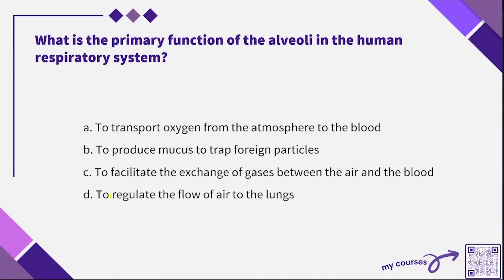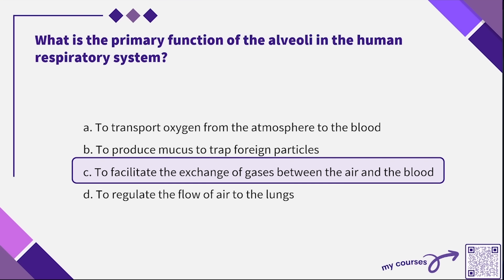Now let's get into questions, starting with some med term. What is the primary function of the alveoli in the human respiratory system? A) to transport oxygen from atmosphere to the blood, B) to produce mucus to trap foreign particles, C) to facilitate the exchange of gases between the air and blood, or D) to regulate the flow of air in the lungs? For these questions, anatomy pictures can be helpful. The answer is C — to facilitate the exchange of gases between the air and blood.